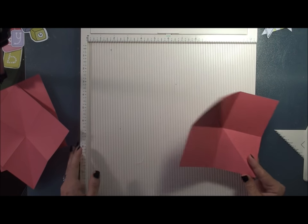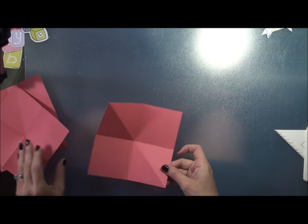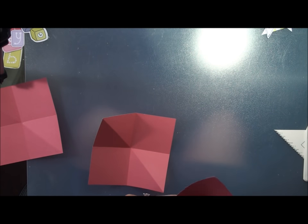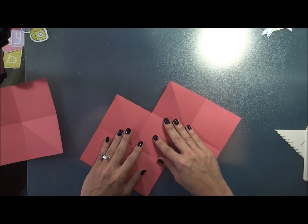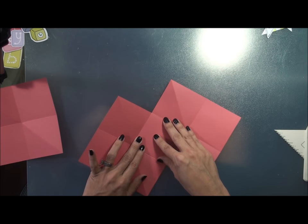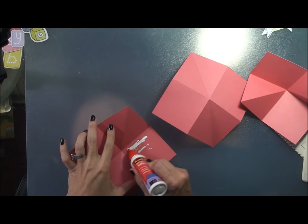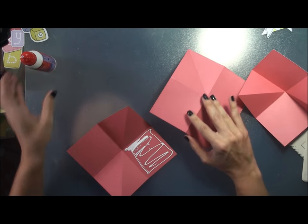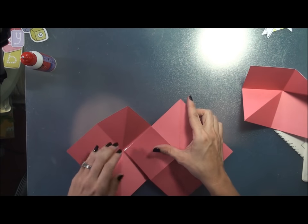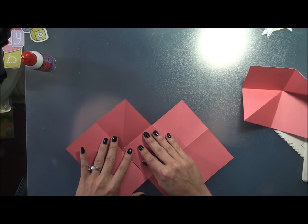So the next step is to start gluing it together. So you're going to take this first piece and your second piece and you're going to overlap one of the non-scored rectangles and glue it down. Alright, so the first thing you're going to do is just apply your glue liberally and attach the first piece down.